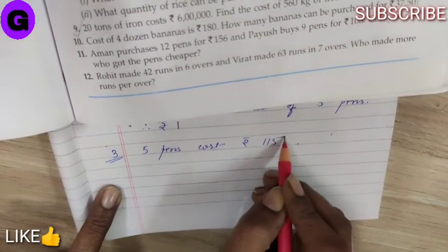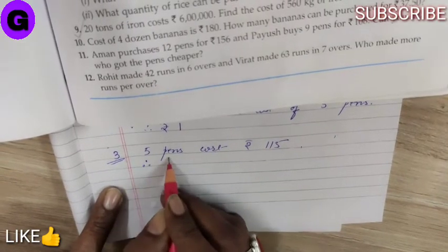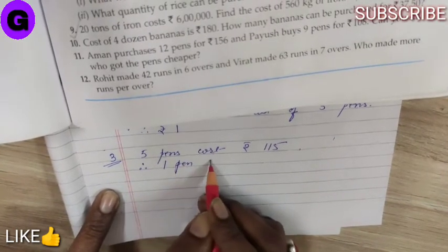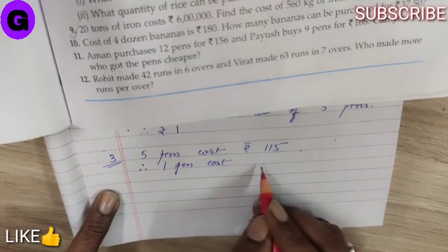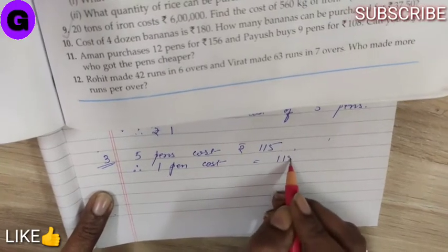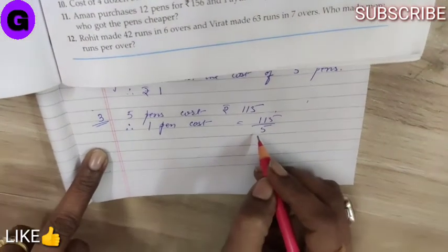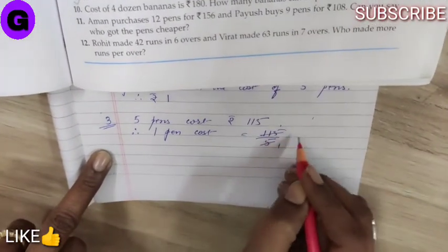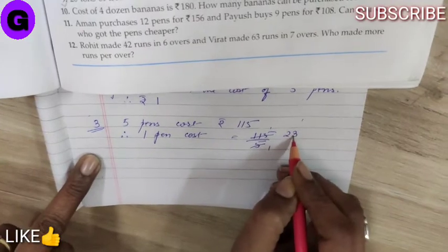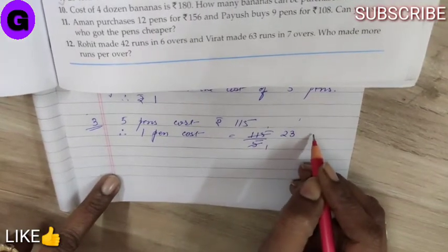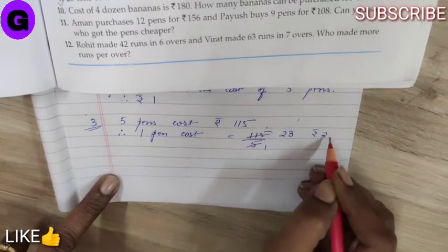Therefore, 1 pen will cost rupees 115 by 5. So, after reducing it to the lowest term, we get rupees 23,